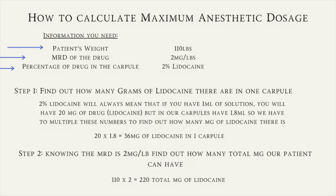To calculate maximum anesthetic dosage in a question, you usually need some information that will be given to you either in a case study or the question itself. The three things you really need are: the patient's weight, which you'll find in their medical history or chart; the MRD of the drug, which is usually provided from a chart like the Malamed book; and the percentage of drug in the carpule.